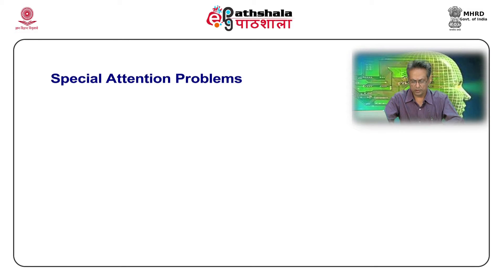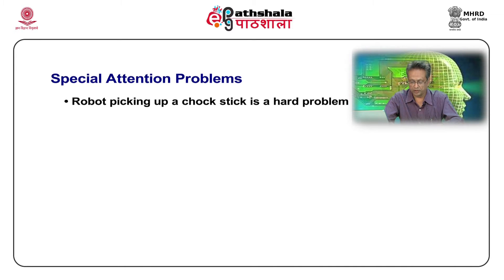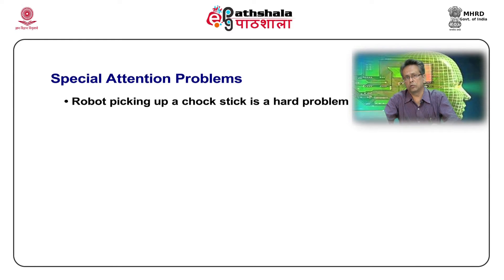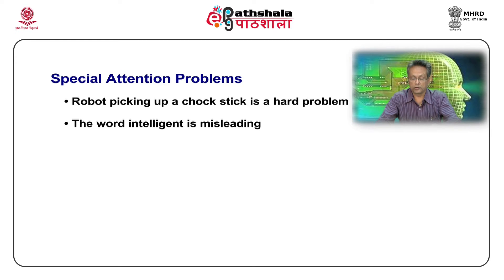Why is it hard for computers to solve these problems? Computers are not designed to solve these problems. They are designed using something called the von Neumann architecture, where there are processors — very, very fast processors — that execute things in sequential fashion. Unlike that, the human brain is equipped with neurons.